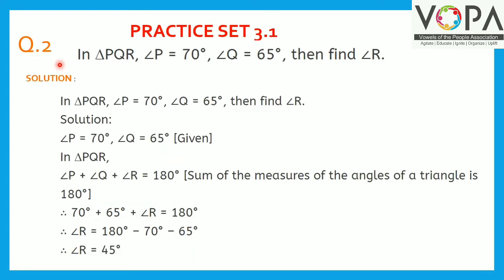Question number 2. In triangle PQR, angle P is equal to 70 degrees and angle Q is equal to 65 degrees. Then find angle R. The solution is: angle P equals 70 degrees and angle Q equals 65 degrees are given. In triangle PQR, angle P plus angle Q plus angle R is equal to 180 degrees, because the sum of the measures of the angles of a triangle is 180 degrees.